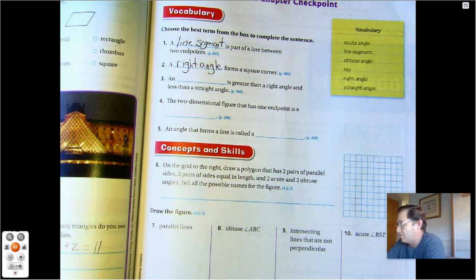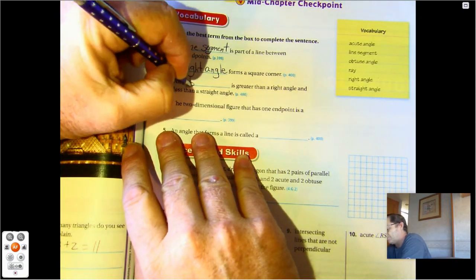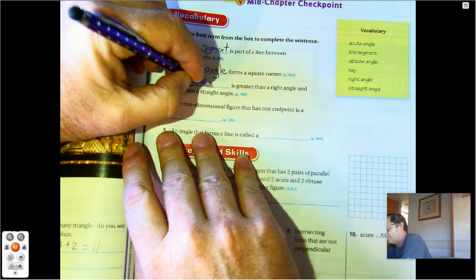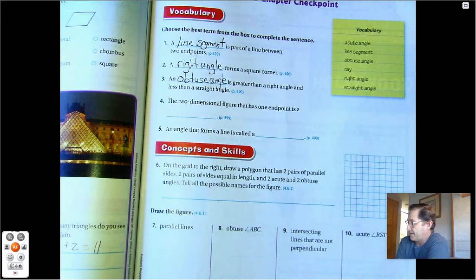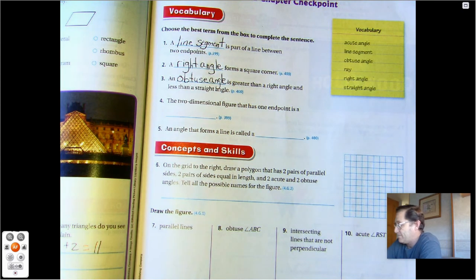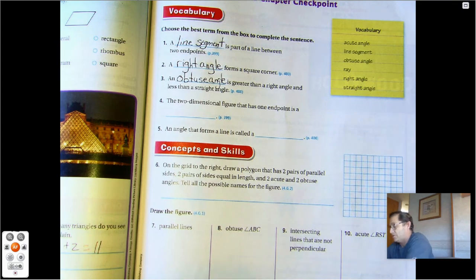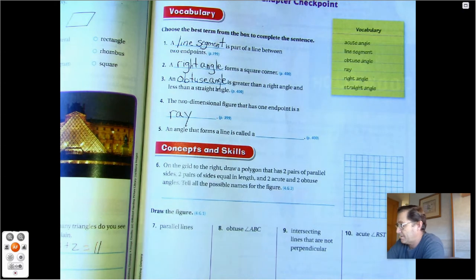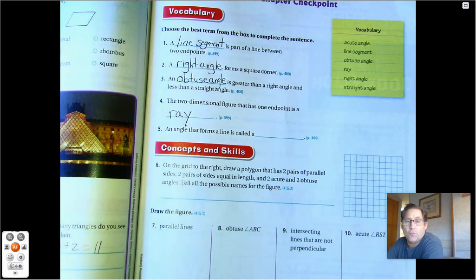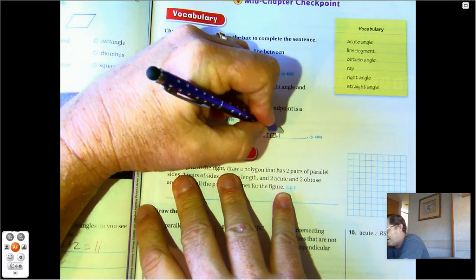A blank is greater than a right angle and less than a straight angle—that would be an obtuse. The two-dimensional figure that has one endpoint is a ray. An angle that forms a line is a straight angle.